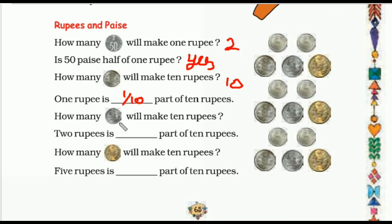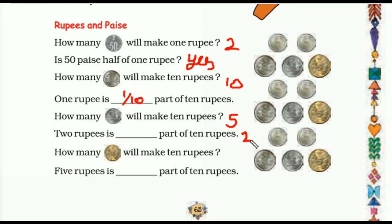Now how many two-rupee coins will make ten rupees? Five two-rupee coins will make ten rupees, so we can write here: five. Then two rupees is what part of ten rupees?